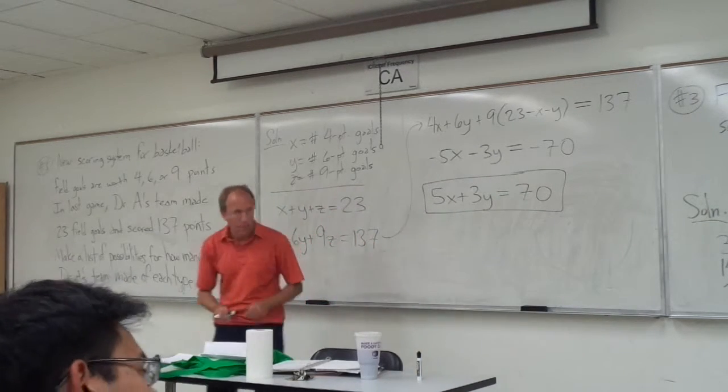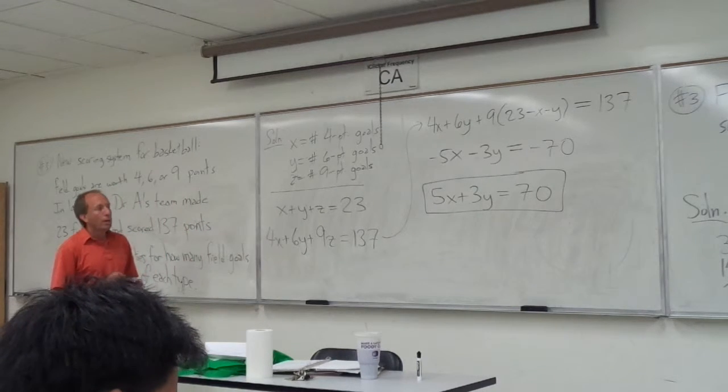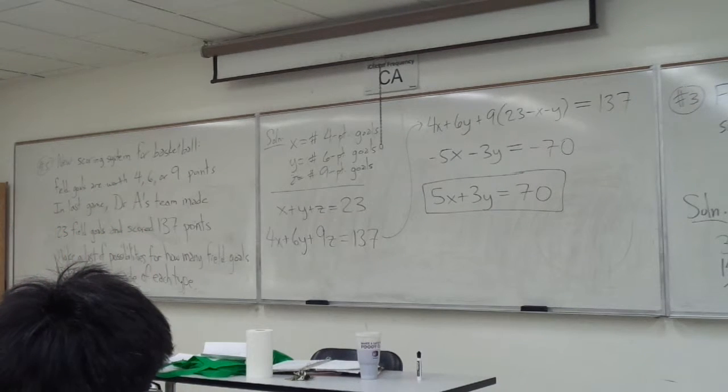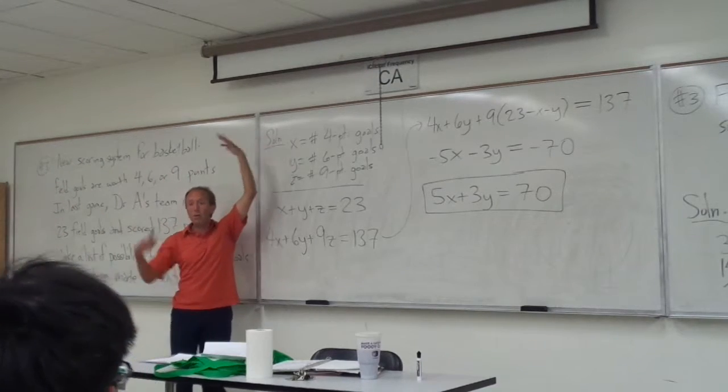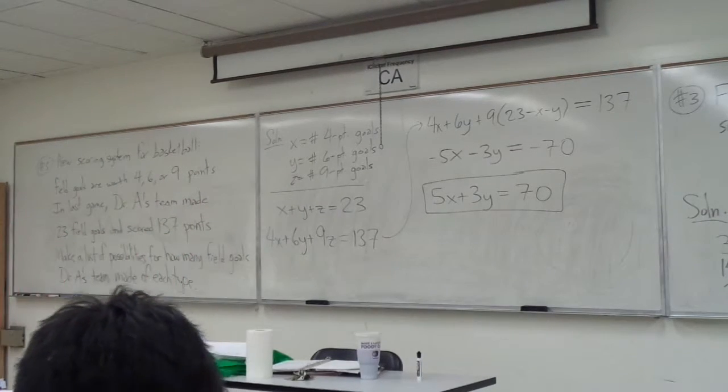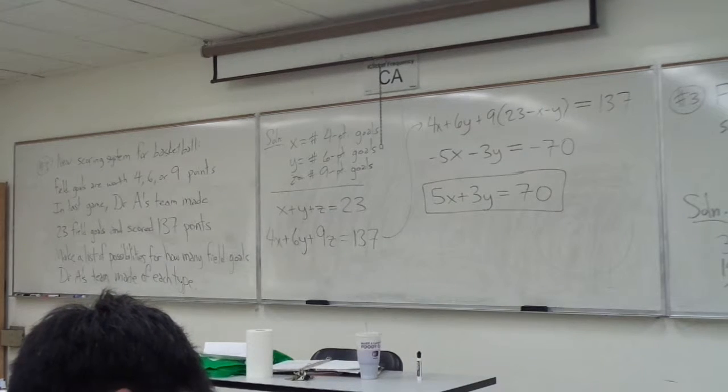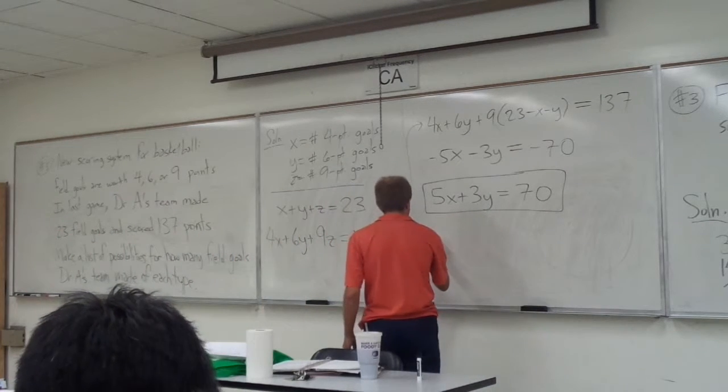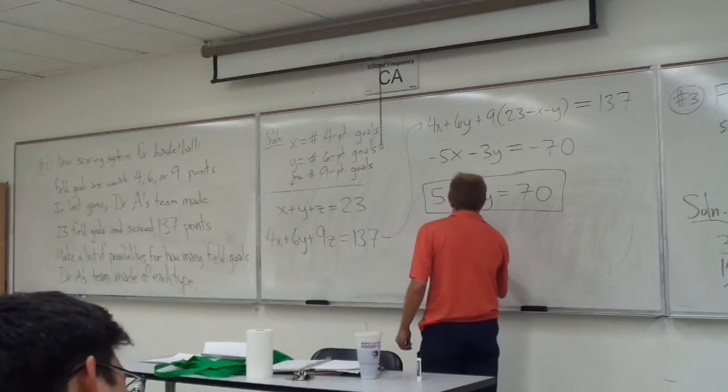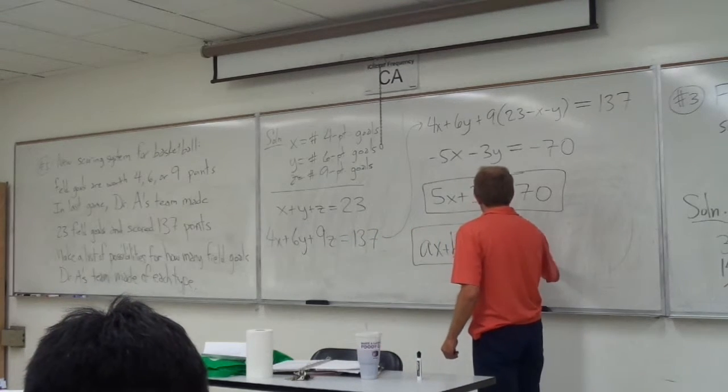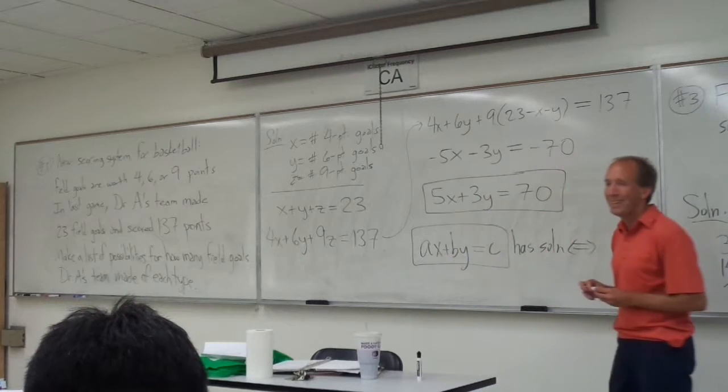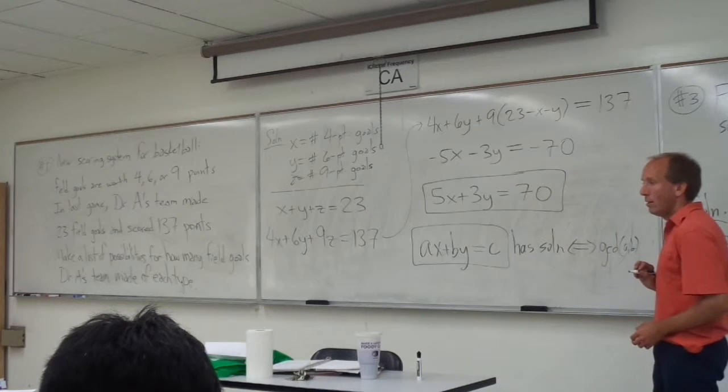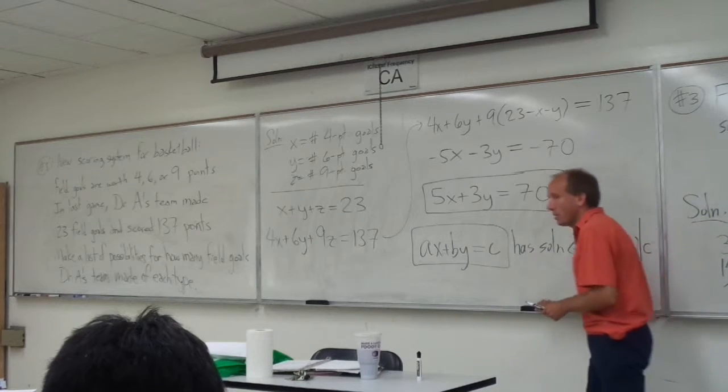Okay, so do these Diophantine equations always have solutions for integer solutions? These have to be integers, right? The number of goals that you make is always going to be a whole number, so do we always get a solution to a Diophantine equation? Not always, right, depends on the numbers. So do you remember what the condition is? If I have AX plus BY equals C as my Diophantine equation, this has a solution if and only if, what was the condition? GCD of A and B. Right, the GCD of A and B divides into C.